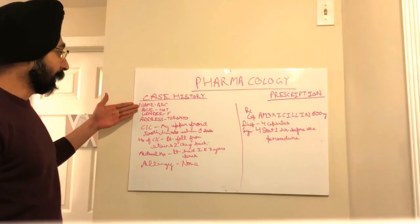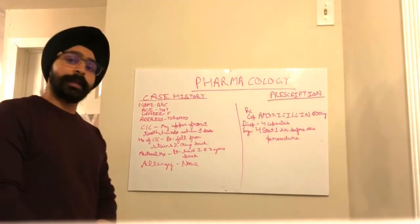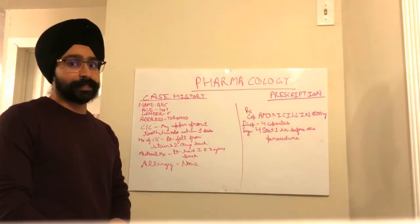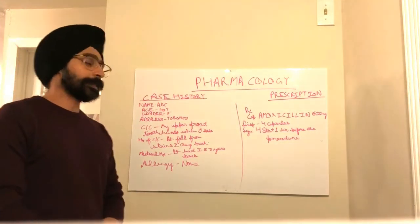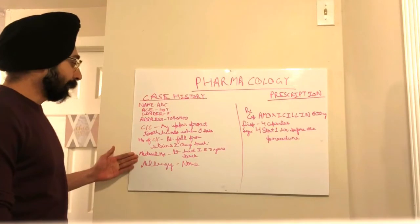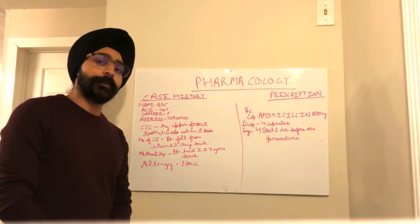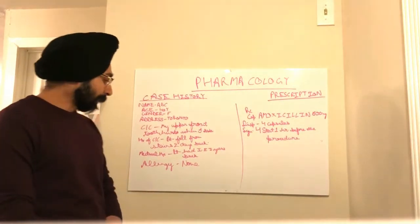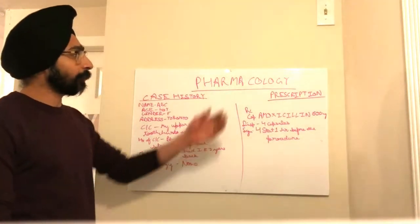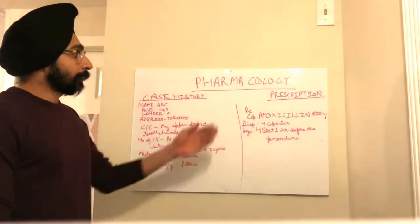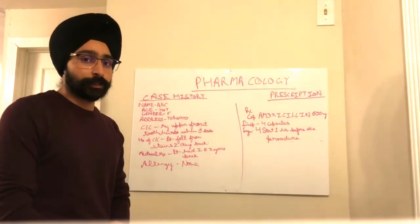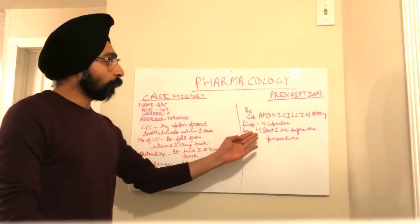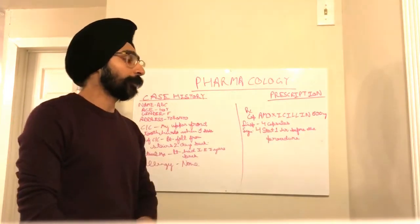I have a case history with the patient's name, age, gender, and address. The patient's chief complaint is that her upper front tooth hurts when she bites. The history is that the patient fell from stairs two days back. The medical history suggests she had infective endocarditis three years back. No known allergies. In the prescription given to the patient, since she had to undergo an extraction, she was given amoxicillin 500 milligram — four capsules to be taken one hour before the procedure.